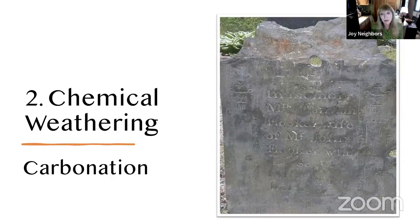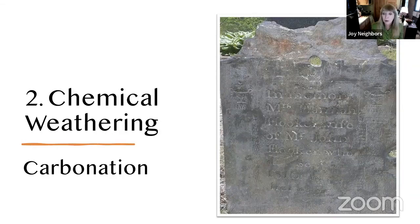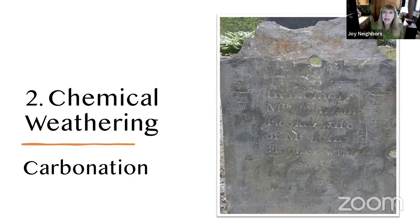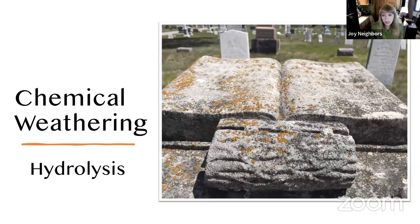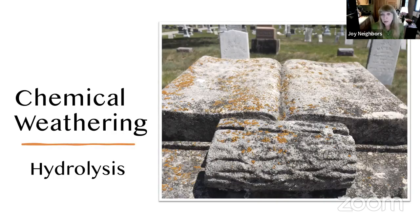Chemical weathering is the second type and is caused by exposure to pollutants like acid rain. There are three types: carbonation happens when rainwater seeps into cracks and widens the gaps, causing the stone to erode on the surface and lettering to become blurry — especially bad for slate and sandstone. The second is hydrolysis, when acid rain reacts to certain minerals in the stone, causing it to decompose and start pitting — found on limestone and on marble.